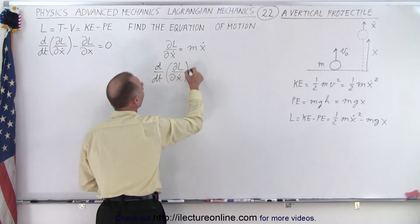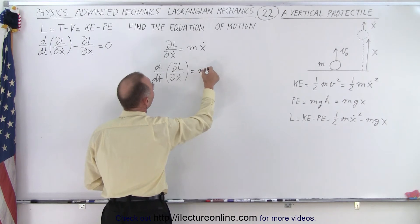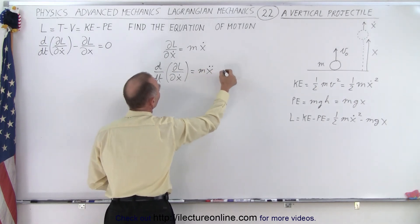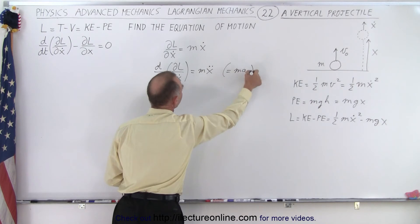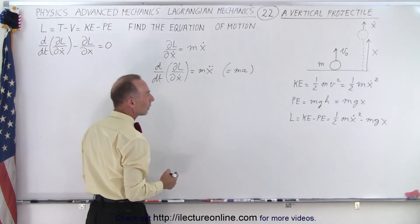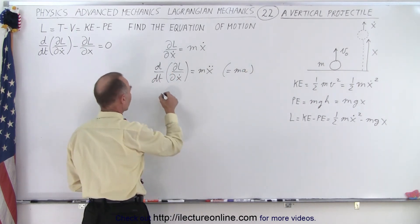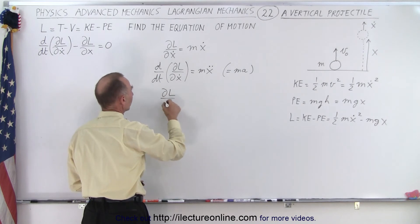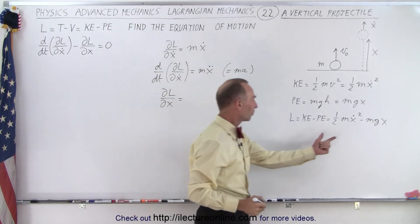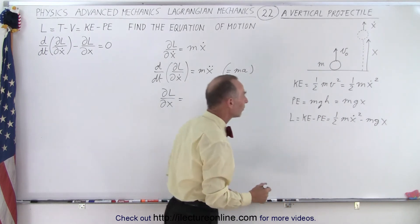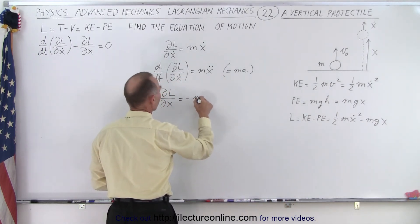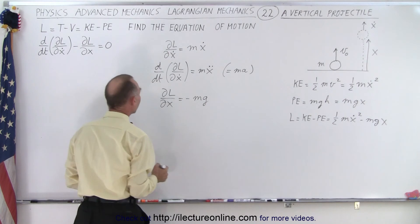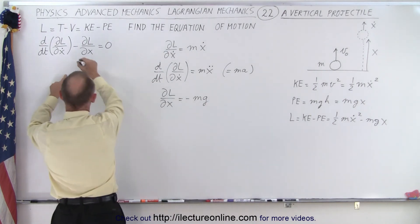And then if we take the time derivative of that — d/dt of the partial of the Lagrangian with respect to x-dot — that will be equal to mx-double-dot, which of course is equal to ma. Then we need to find the partial derivative of the Lagrangian with respect to x. The first part goes to zero and we end up with minus mg.